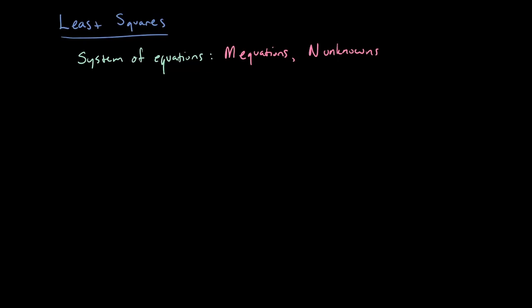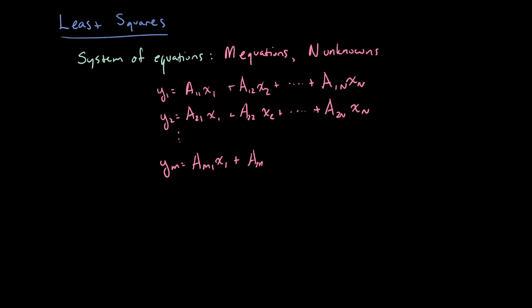Suppose we have a system of m equations and n unknowns. We can write this as y1 equals some weighted combination of the variables x1 up to xn. These are our unknowns and we know y and we know these weights. We'll have m equations with n unknowns x1 up to xn, and we're interested in solving the system of equations.